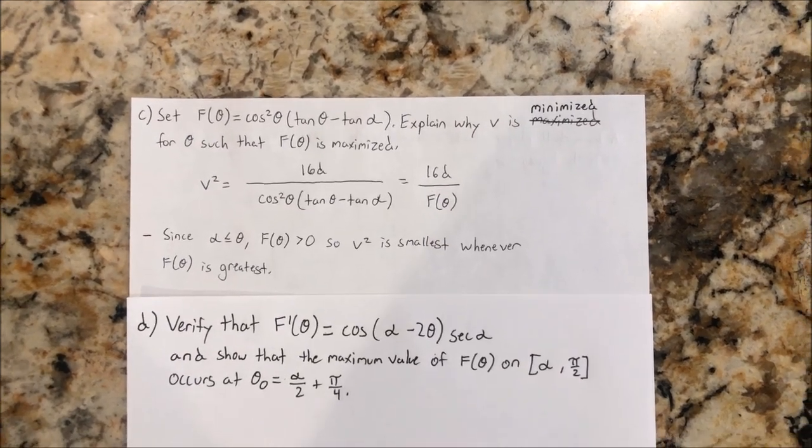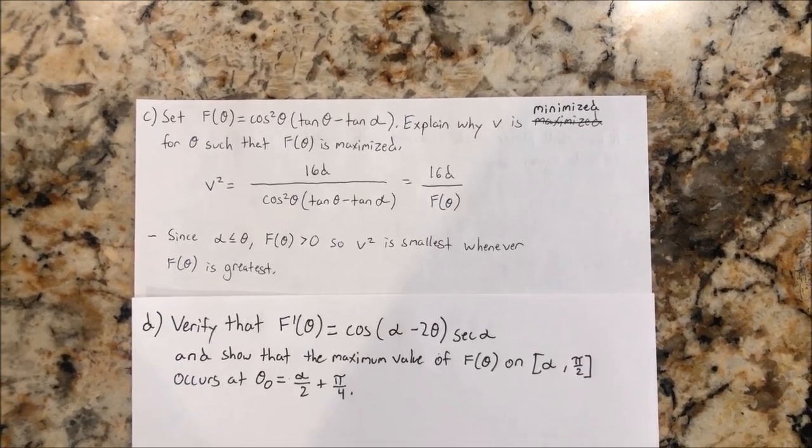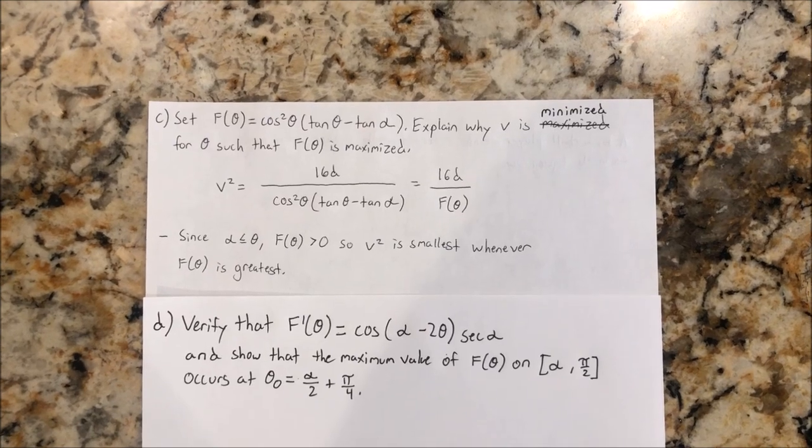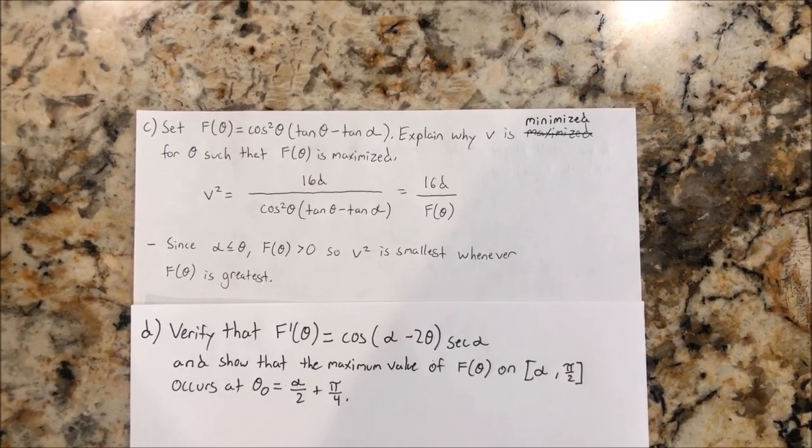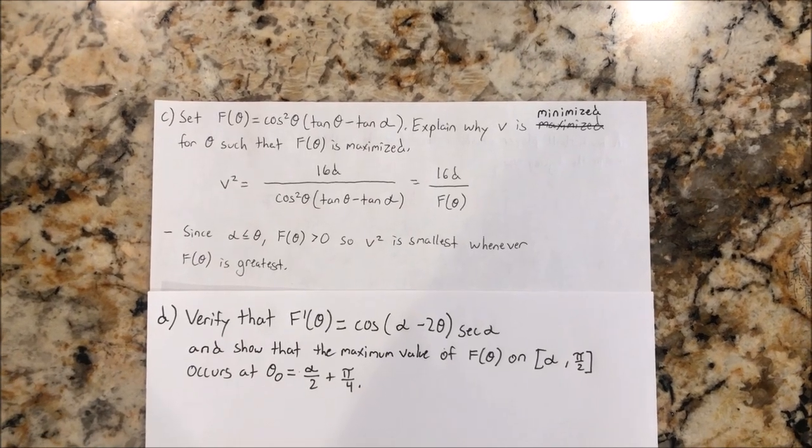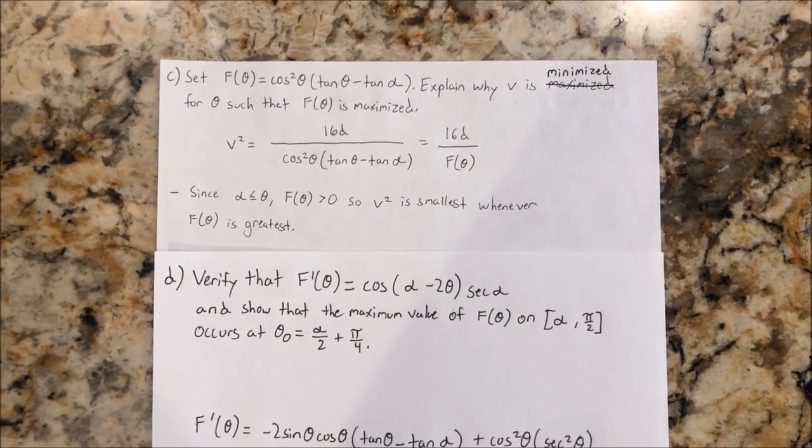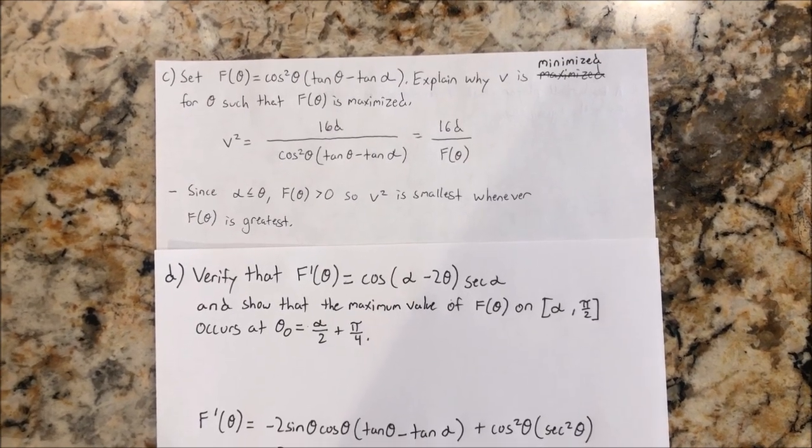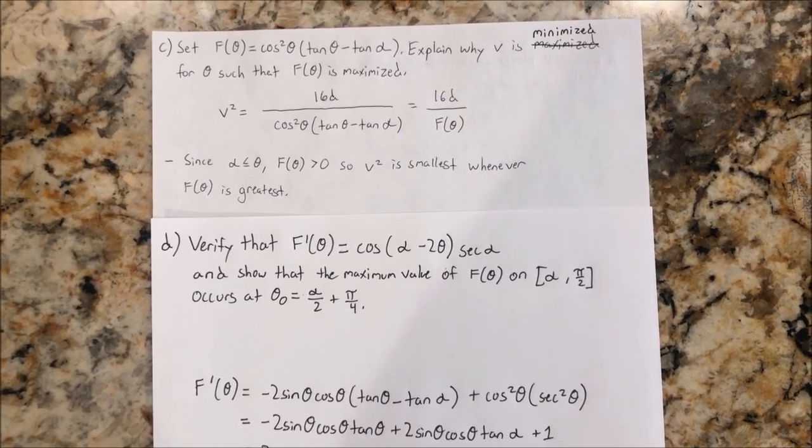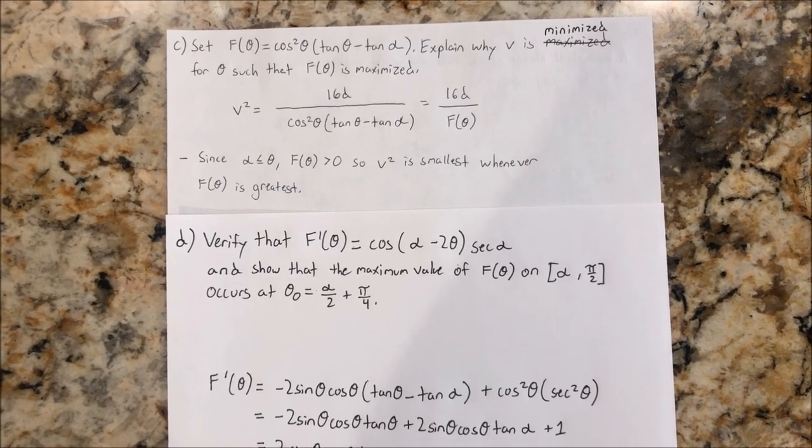In part D, we want to verify that f prime of theta is equal to cos alpha minus 2 theta times secant alpha, and show that the maximum value of f of theta on theta alpha to pi over 2 conclusive occurs at theta 0 is equal to alpha over 2 plus pi over 4. So in the first step, we would need to apply the chain rule and the product rule to find the derivative. And then we would rearrange the equation and simplify by distribution.